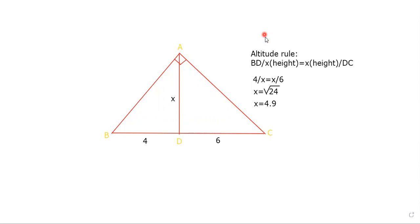All right, now let's talk about the leg rule. Let's label that y. Now we could take 4.9 and 4 and use the Pythagorean theorem to find y, but we're just going to use the leg rule.